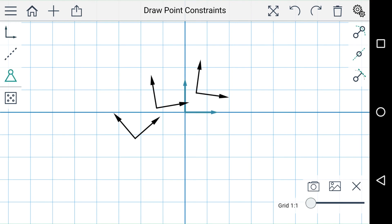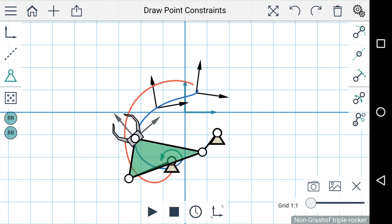So these actually define where the ground pivots will be placed. Just tap on the screen where you'd like the pivots to be placed and the linkage is generated for you.